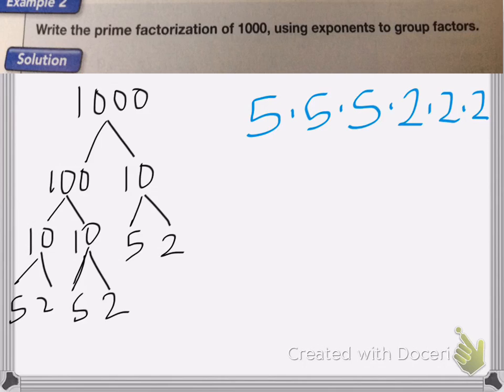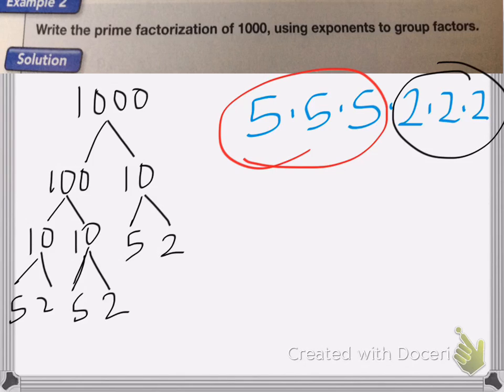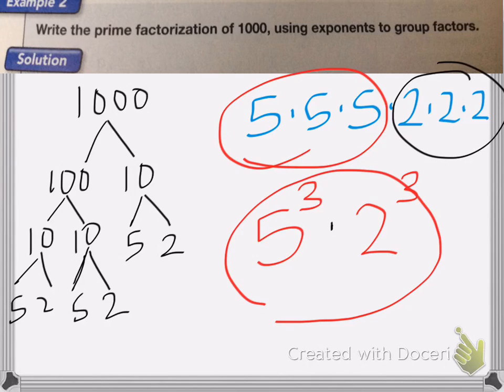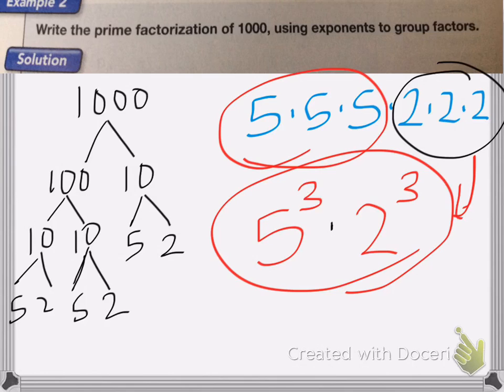So my prime factorization is 5 times 5 times 5 times 2 times 2 times 2. So once we write these using exponents to group these factors, I can use an exponent to group those numbers. So to group those, I would do 5 to the 3rd power, because I have 3 5's. And then I would times that by 2 to the 3rd power, because I have 3 2's. And that would be my answer. Both of these are correct, but when it wants you to group it by exponents, you need to do this one.